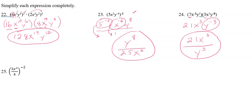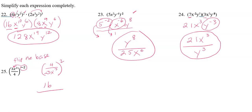Number twenty-five: a negative exponent tells you to flip the base. The base is 3x³ over 4, so flip it to get 4 over 3x³. Then change the exponent to positive — raise everything inside the parentheses to the second power: 4² = 16 on top; 3² = 9 on the bottom; x³ raised to the 2nd power — multiply — gives x⁶. The answer is 16 over 9x⁶.